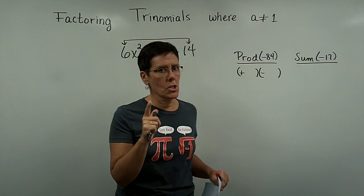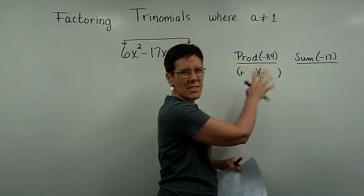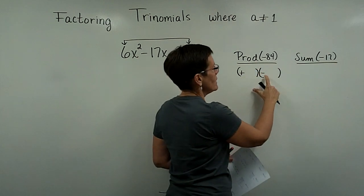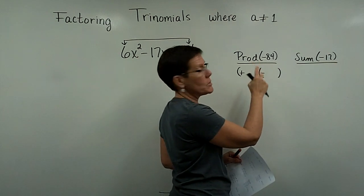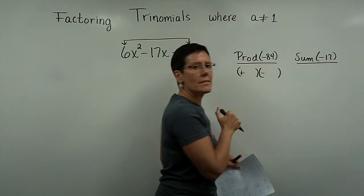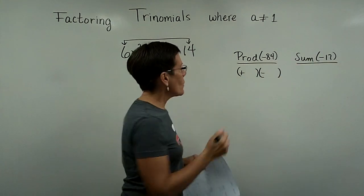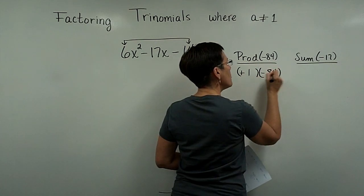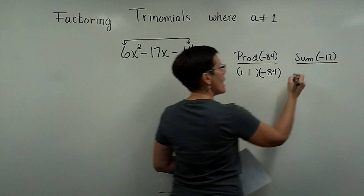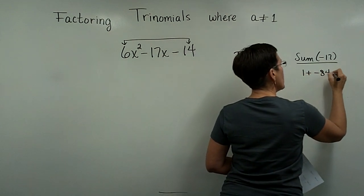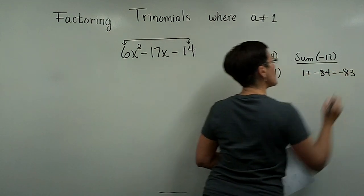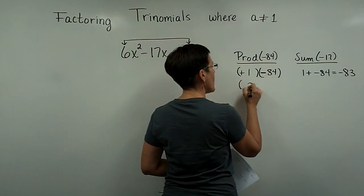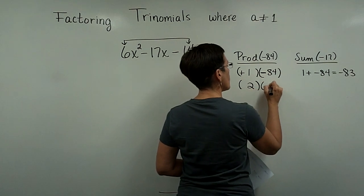I would like the negative number, if you will, to be my bigger value because I want these to add to be a negative number. So as I list one and 84 here for example, I want the 84 to be negative. That's not going to work and so next I'm going to go with a positive 2 and a negative 42.